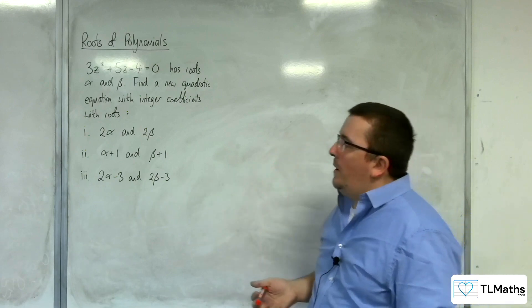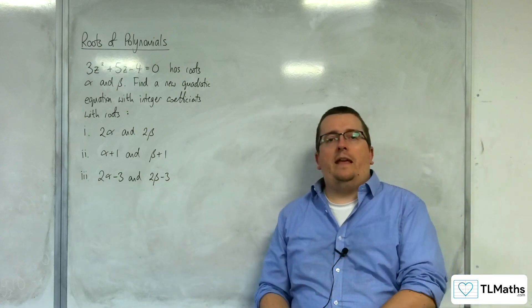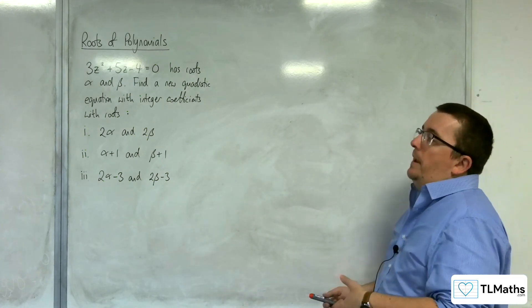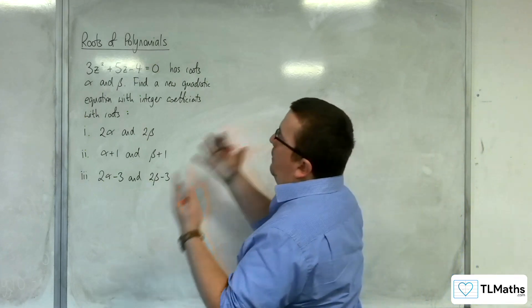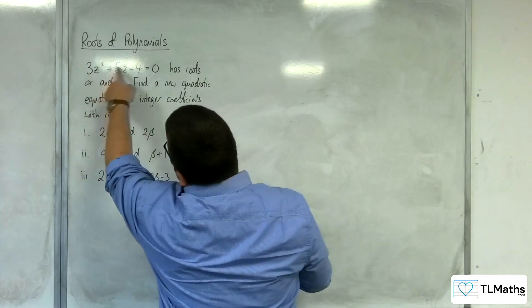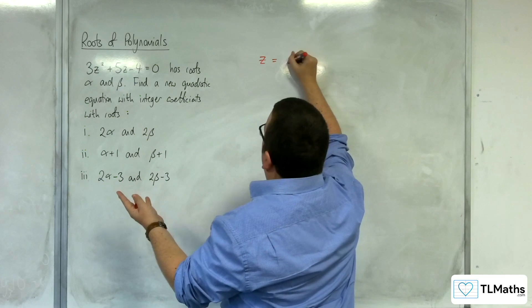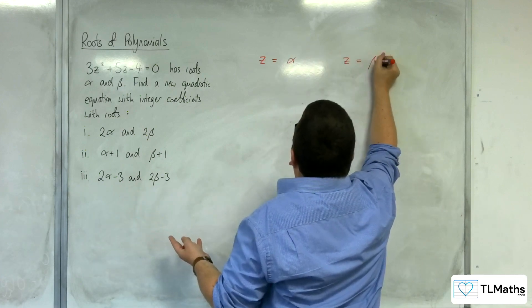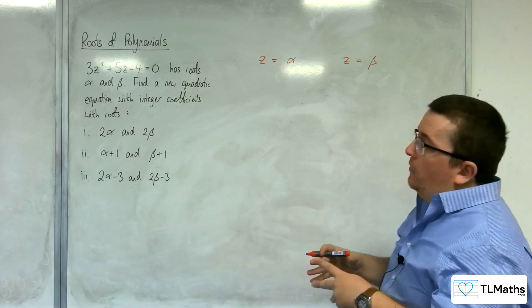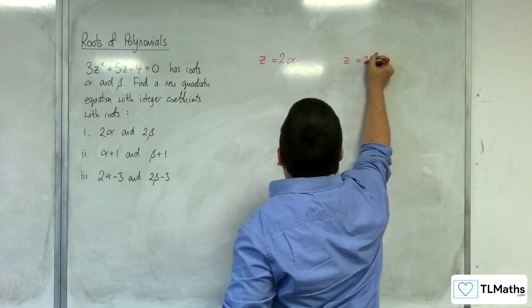First one, 2 alpha and 2 beta. So what I'm going to be using here is referred to as the substitution method. Now the idea would be that if we're saying that the roots are alpha and beta, then I would be able to solve this equation to get z equals alpha and z equals beta. But now I'm needing to get 2 alpha and 2 beta.